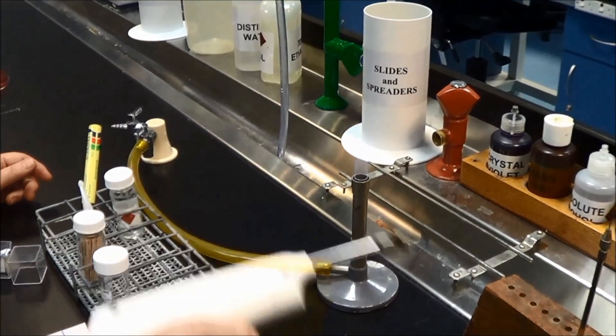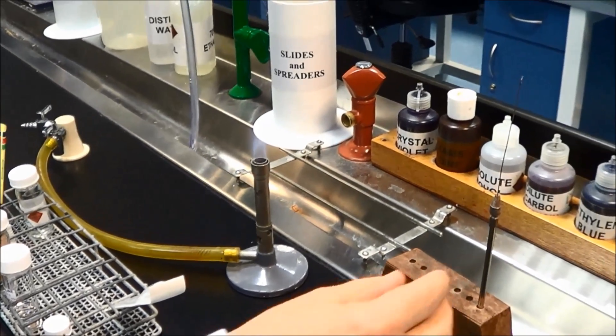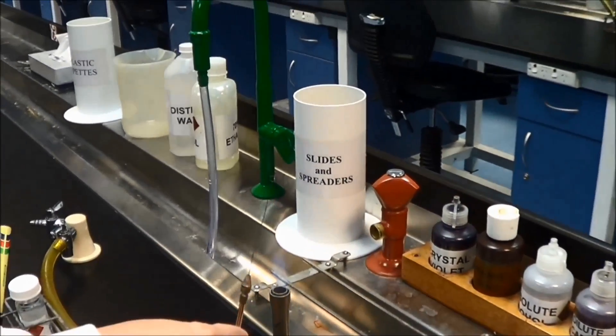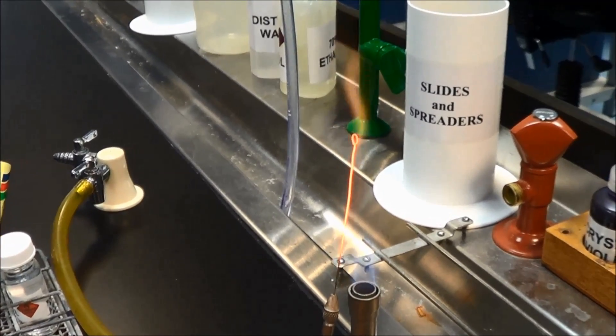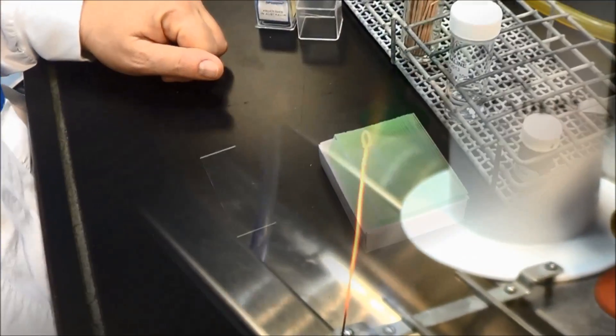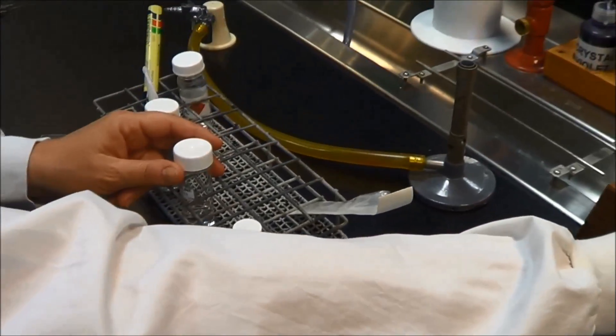Capsule staining to prepare an India ink wet mount for microscopic examination of Cryptococcus. Pre-flame a loop to ensure it is sterile. Using the sterile loop, place a loopful of saline onto a microscope slide.